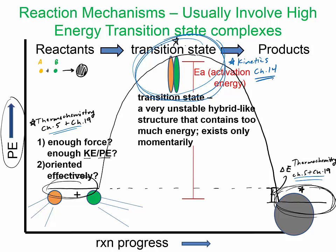The transition state is a very unstable hybrid-like structure that contains a lot of energy. It's kind of like if you were burning something — say wood reacting with oxygen to produce CO₂ and H₂O — the transition state would be like fire: weird carbon-hydrocarbon matter that doesn't even have a definite form yet. That would be the high-energy transition state.